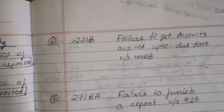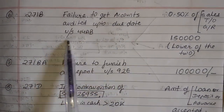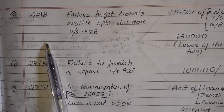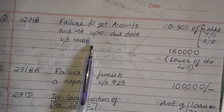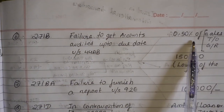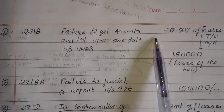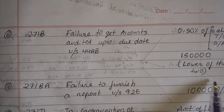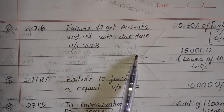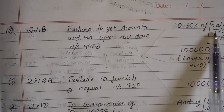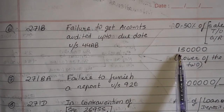Number 6: Section 271B — Failure to get accounts audited by the due date under section 44AB. If accounts are not audited by the due date, the penalty is 0.5% of sales, turnover, or gross receipts, or ₹1,50,000 — whichever is lower. We read this in PGBP. The lower of the two will be the penalty.